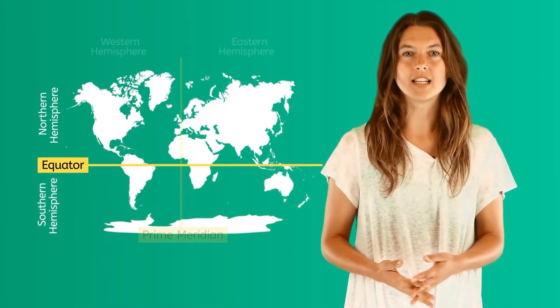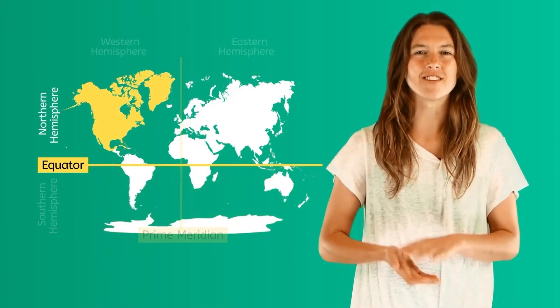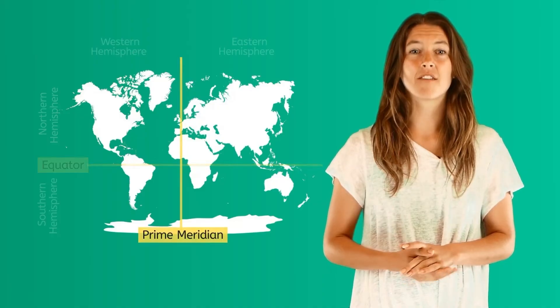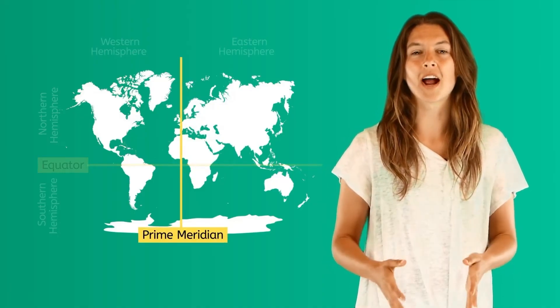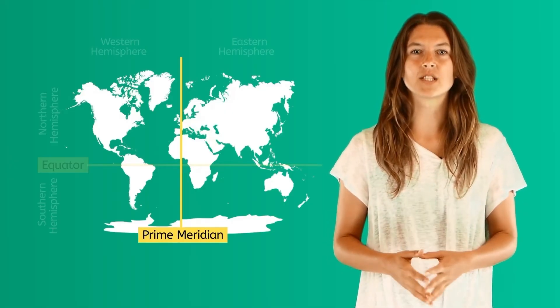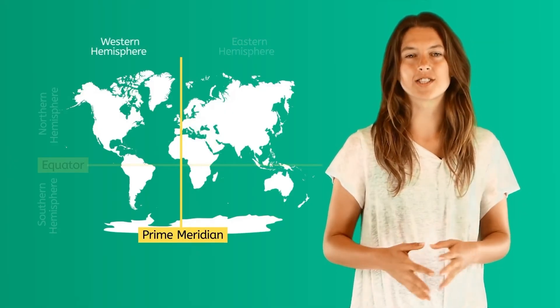North America is located in the Northern Hemisphere. The vertical imaginary line through the center of the Earth is called the Prime Meridian, and it divides the world into the Eastern and Western Hemispheres.